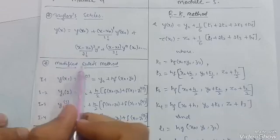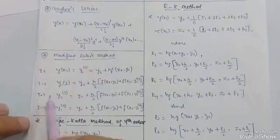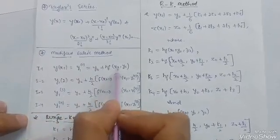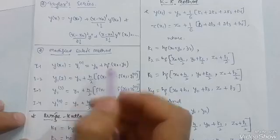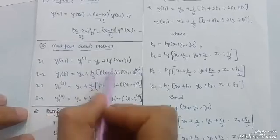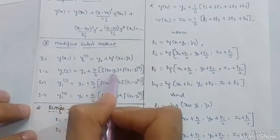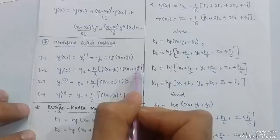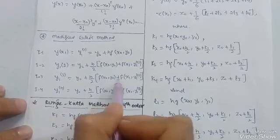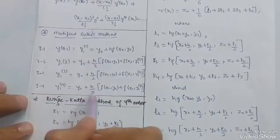Next is the Modified Euler's method, where you calculate four iterations. The first iteration: y₁⁽¹⁾ = y₀ + h·f(x₀, y₀). The second: y₁⁽²⁾ = y₀ + (h/2)[f(x₀, y₀) + f(x₁, y₁⁽¹⁾)]. The third: y₁⁽³⁾ = y₀ + (h/2)[f(x₀, y₀) + f(x₁, y₁⁽²⁾)]. The fourth: y₁⁽⁴⁾ = y₀ + (h/2)[f(x₀, y₀) + f(x₁, y₁⁽³⁾)]. You just put in the given values — no rocket science.